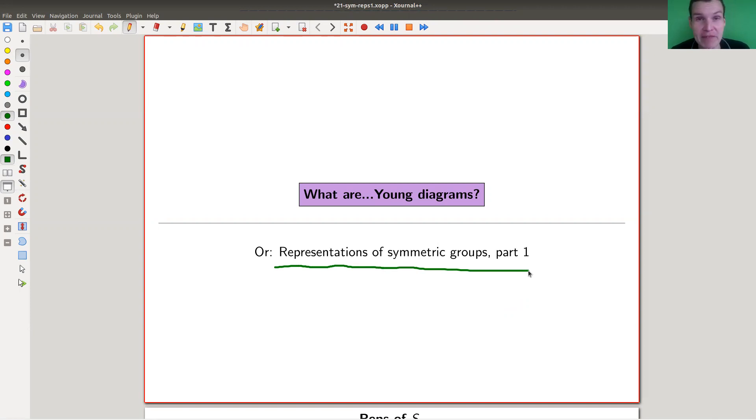So today's topic basically is how can we nicely index the simple representations of the symmetric group. And the answer, a non-trivial answer which came up at the beginning of the 20th century by Young and basically by Frobenius also.